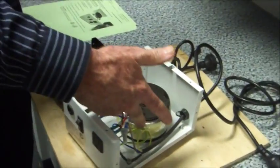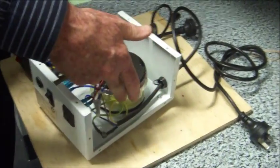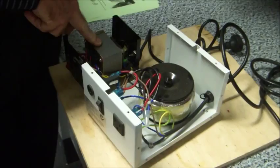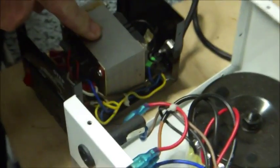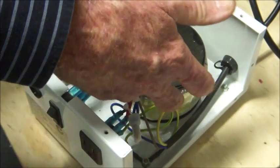Inside the toroidal transformer, it's all soldered, inside the EI transformer they use crimp connections because it's faster and easier. This is better, this is better for longevity.